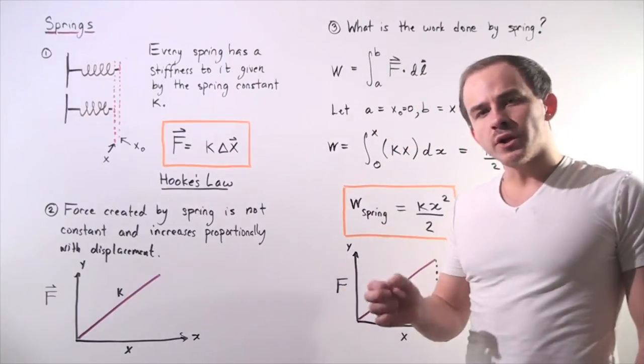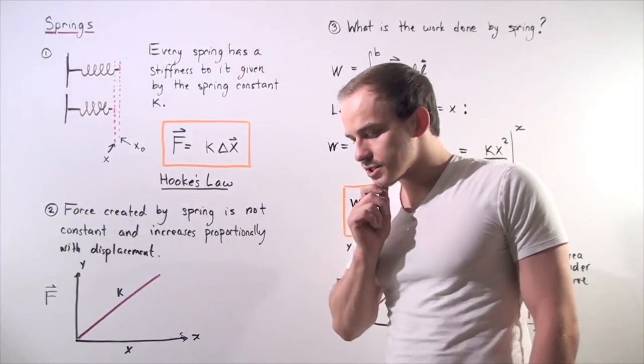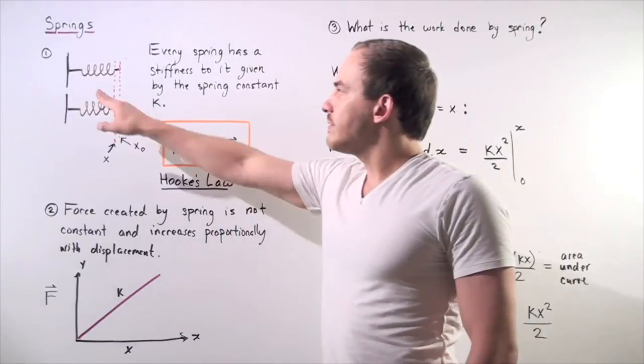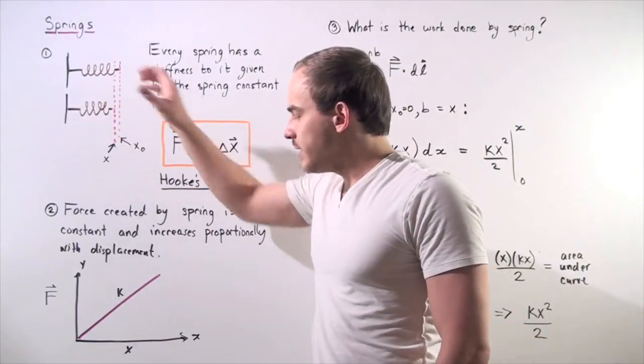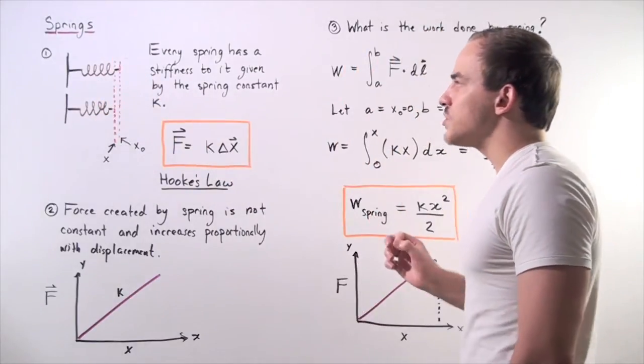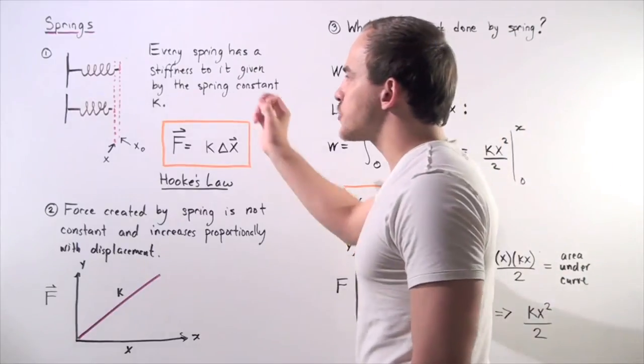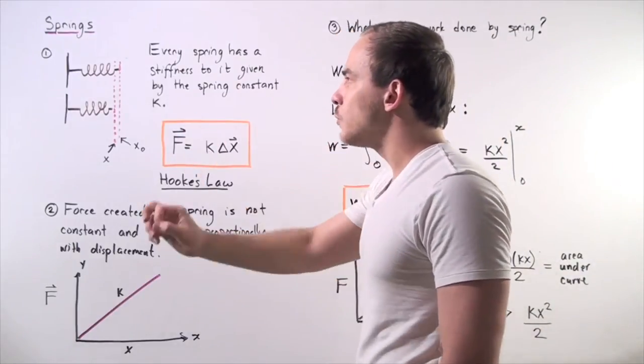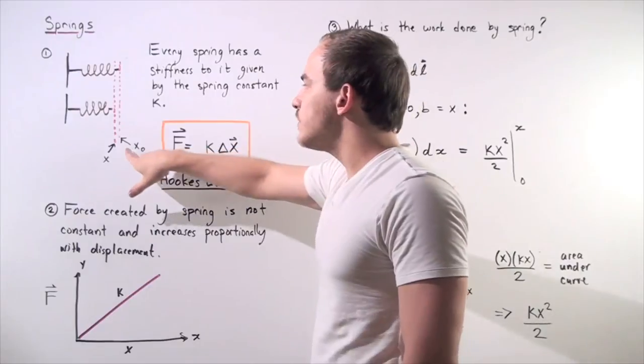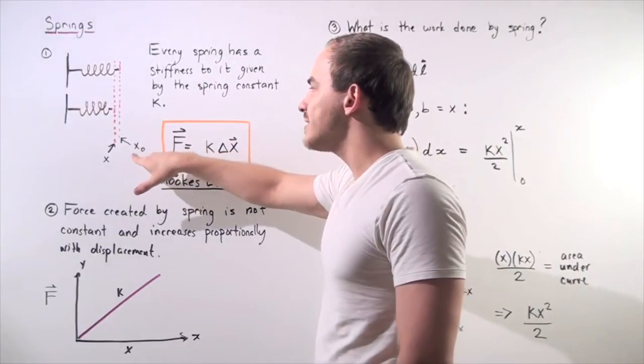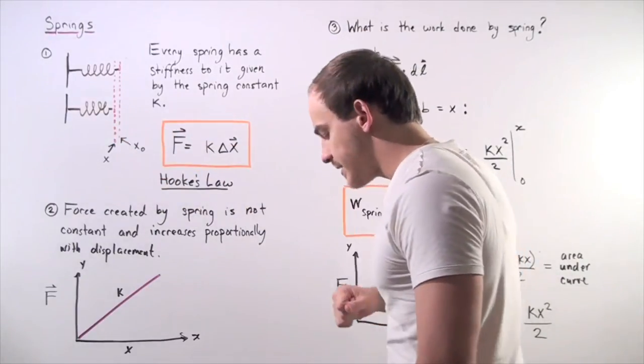So let's talk about the work done by spring force. Let's suppose we have the following spring given in the diagram, and let's suppose our initial position of the spring, when it's not compressed or stretched, is given by the following position, x knot, lying along the x-axis.